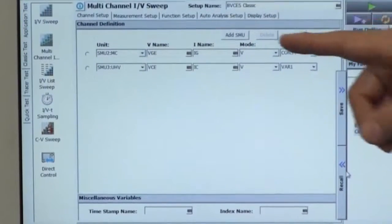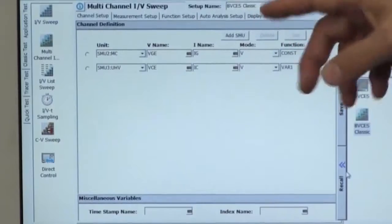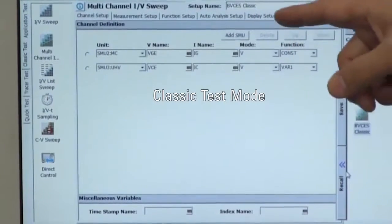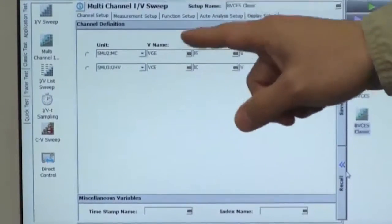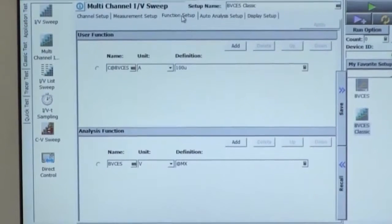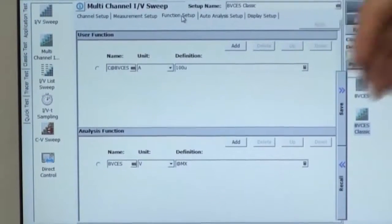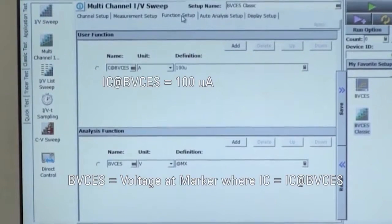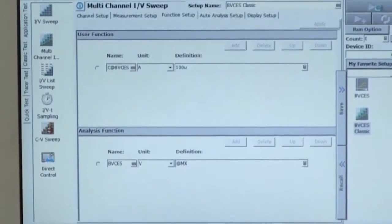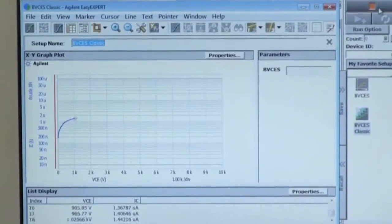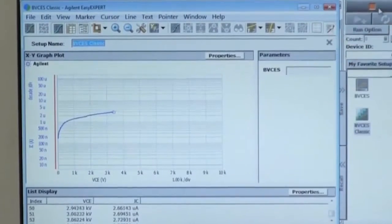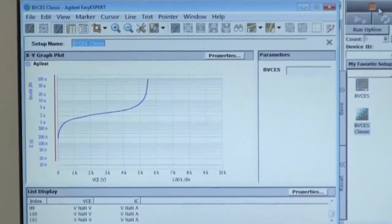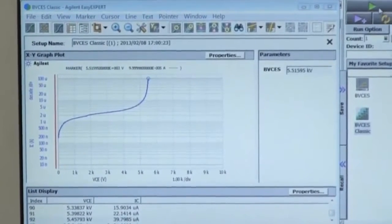So next, I'd like to show you a breakdown voltage measurement by using the classic test mode. In the classic test mode, it has an auto-analysis function to extract specific semiconductor parameters automatically. So by using these functions, B1505A can measure breakdown voltage at the specified current automatically.